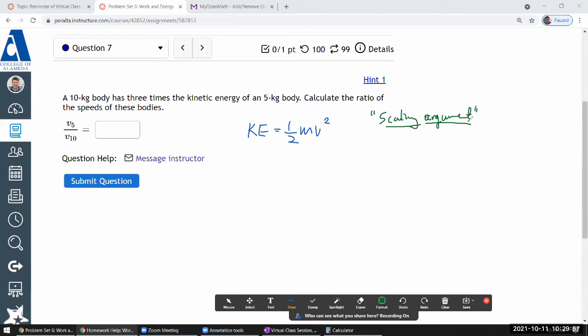So when you are using scaling argument, you are mainly looking at how the expression depends on various quantities. So you see that it depends linearly on the mass, equals mass to the power of one. And you see the kinetic energy depends quadratically on the velocity.